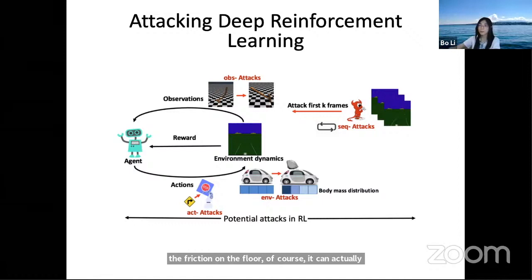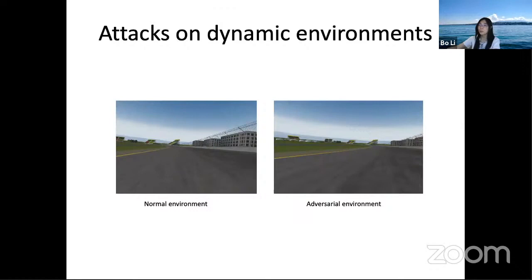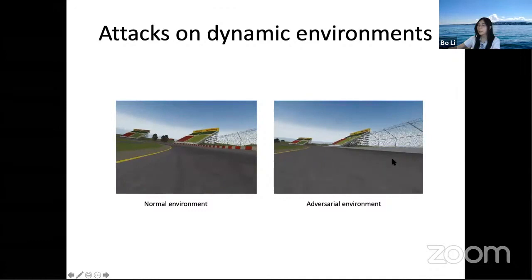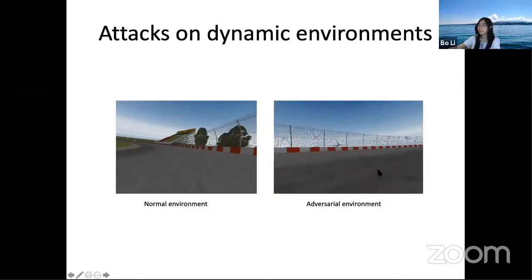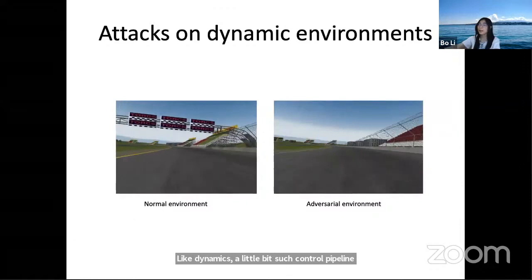Surprisingly, we find that even small environment dynamics — such as the weight of the car or the friction on the floor — can be manipulated to derive targeted attacks. In a simulation environment, by manipulating the car weight slightly within a reasonable range that can't be identified by direct statistical testing, the vehicle can actually achieve the adversarial goal of hitting the wall. This shows that even by manipulating environment dynamics slightly, such control pipelines can also be fooled. Later we'll discuss defense against such reinforcement learning pipelines.